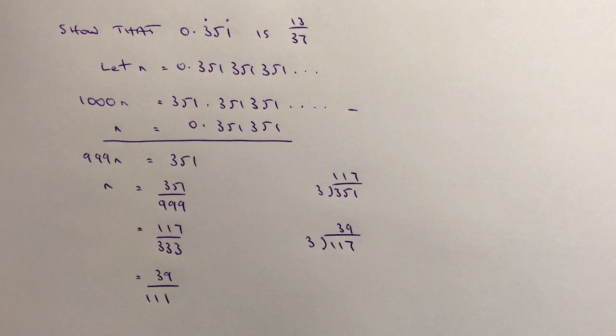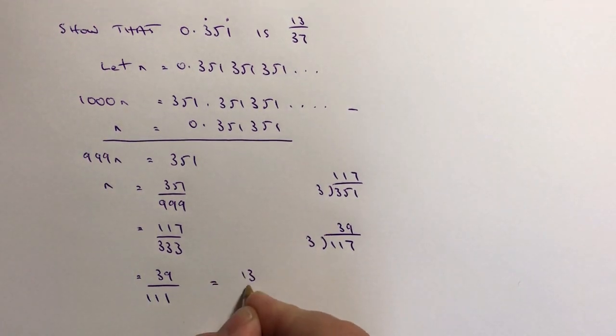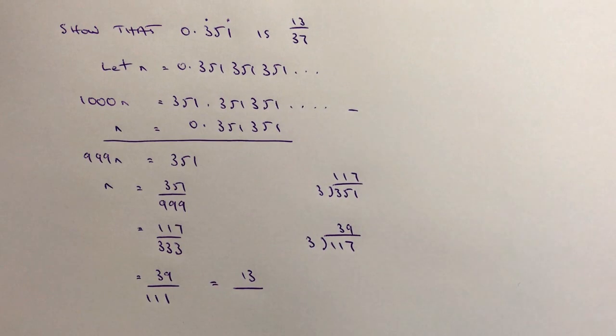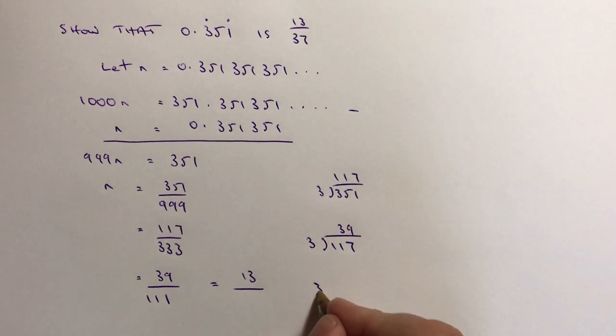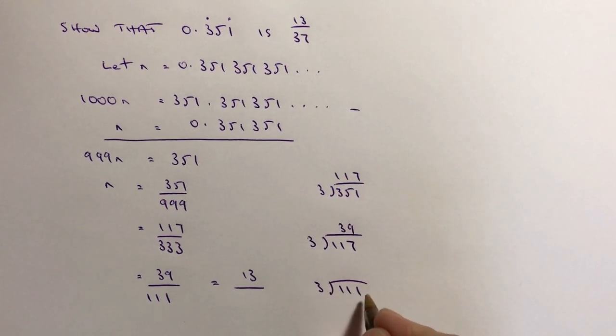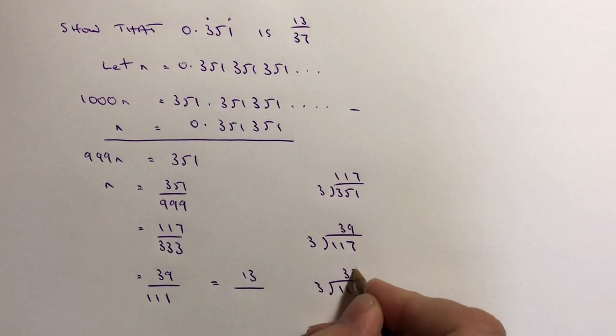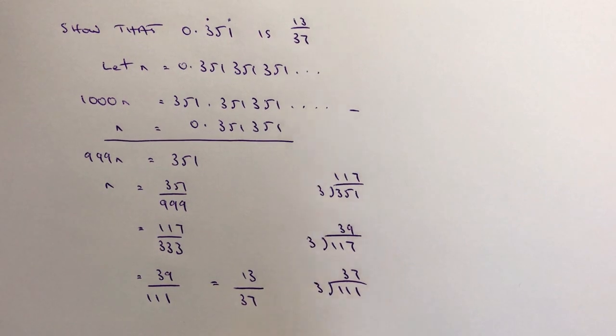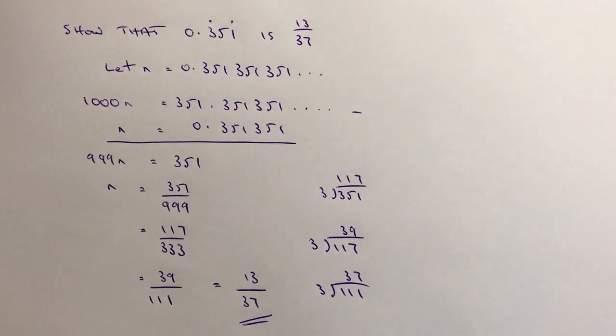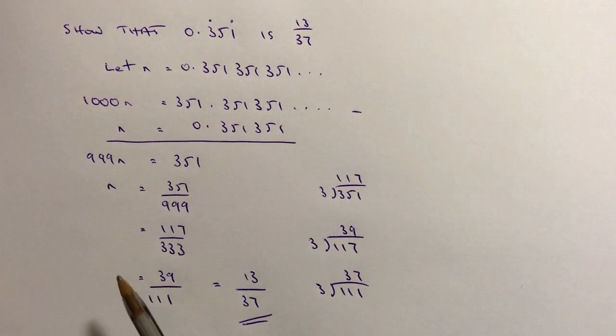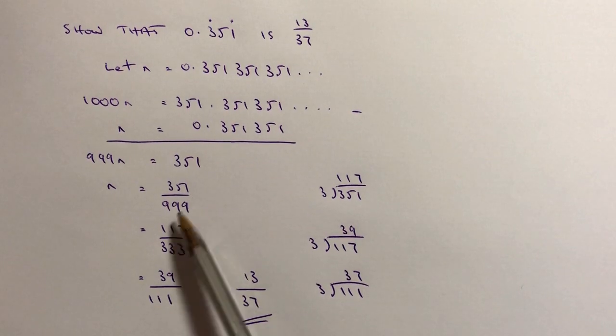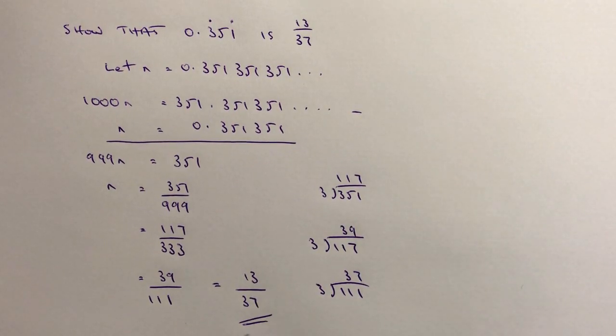And then the final part of this is if I look at 39, it's divisible by 3 and that actually becomes 13, because 13 times 3 is 39. And 111, if I divide that by 3, I'll just do this over here, 111 divided by 3, what I end up with is 37. So this bottom is 37, which means then that the fraction 351 over 999 is 13 over 37.